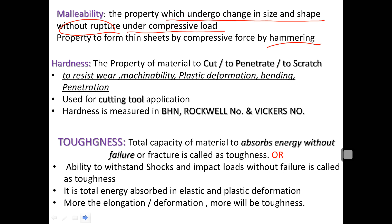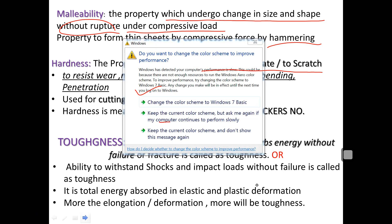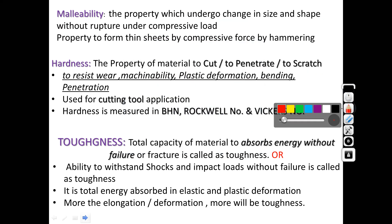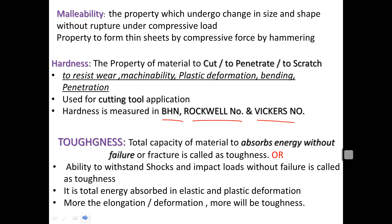Hardness is the ability to cut, penetrate, or scratch other softer materials. It is very useful in cutting tool applications. Hardness is not measured in basic units; different methods and techniques are used. These include the Brinell Hardness Number (BHN), Rockwell hardness number, and Vickers hardness number. These three scientific methods are available to measure hardness.